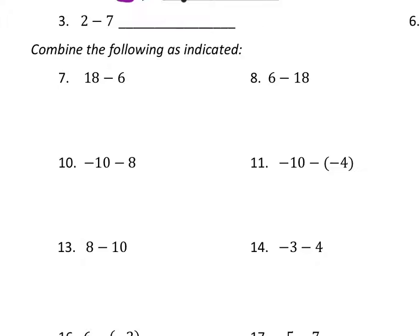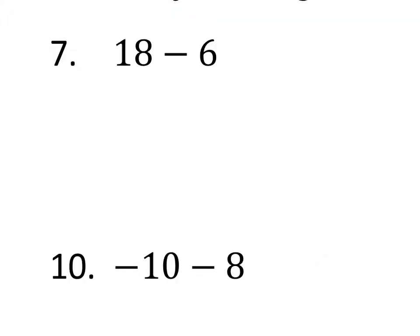All right, let's combine these. So number 7. Let's move away from the money thing just for this one problem. Let's say that you had 18 cookies right now. Minus means that we're getting rid of them, right? So if I ate 6 cookies and I had 18 to start with, then how many do I have after that? I got 12 cookies left over, and so the answer is just 12.